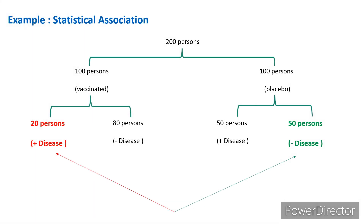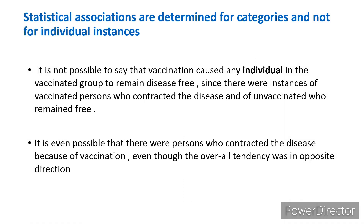However, observing the same data: out of 100 vaccinated persons, 20 still developed disease, and in the placebo group, 50 persons are free from disease even though they did not take any vaccine. Statistical associations are determined for categories and not for individual instances, because it is not possible to say that vaccination caused any individual in the vaccinated group to remain disease-free. There are instances of vaccinated persons who contracted the disease and unvaccinated persons who remained free.